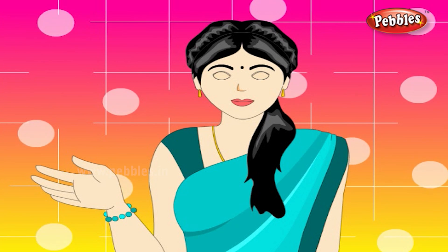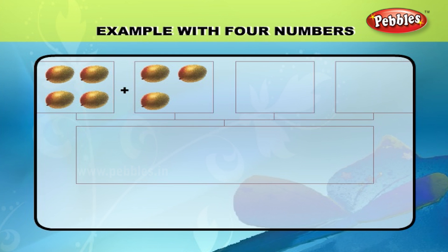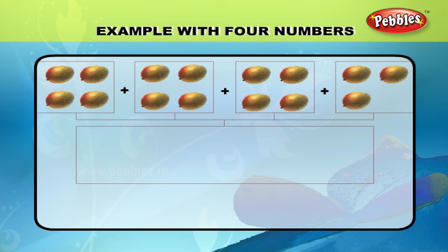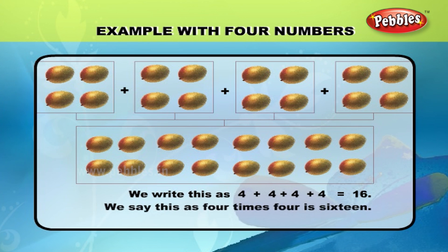We shall see an example with 4 numbers. Let us count these mangoes: 1, 2, 3, 4 plus 4. 1, 2, 3, 4 plus 4. 1, 2, 3, 4 is equal to 16. We write this as 4 plus 4 plus 4 plus 4 is equal to 16. We say this as 4 times 4 is 16. We can write this as 4 into 4 is equal to 16.